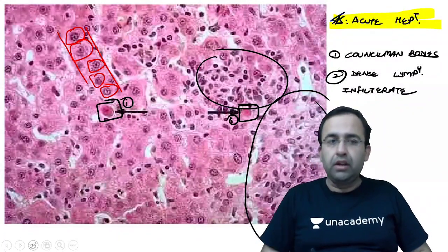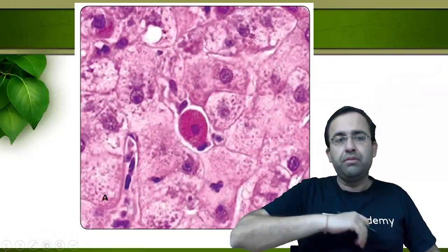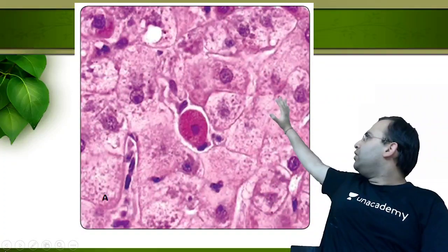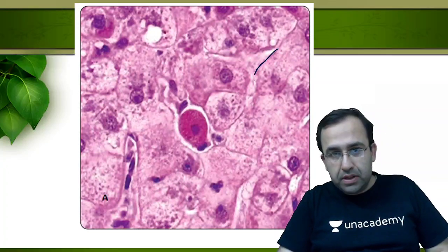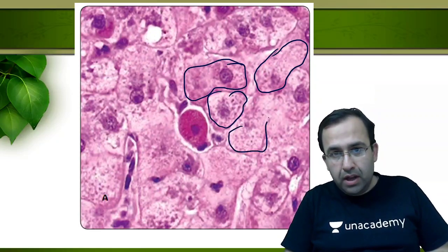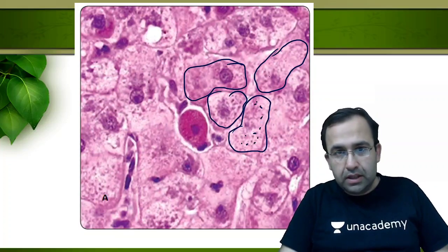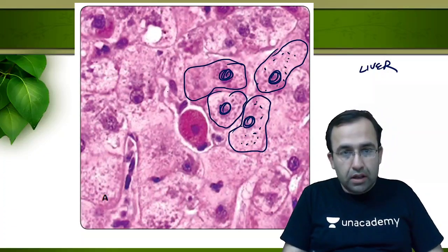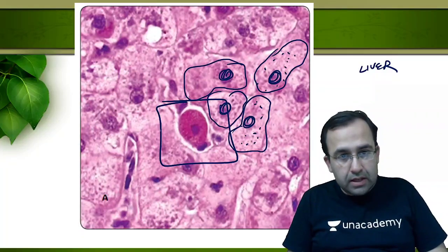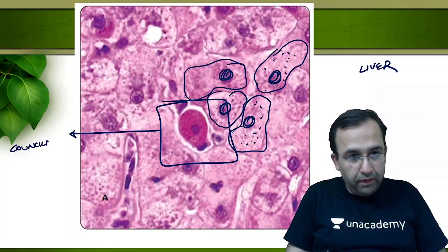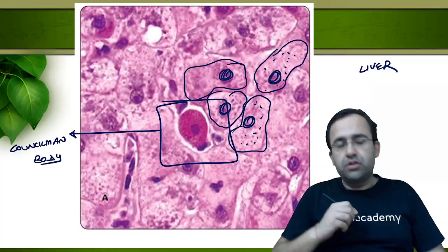This was acute hepatitis. Just to show you a clearer image of councilman bodies — have a look at this. Again, the minute I see this slide, I can make out that all these are the normal hepatocytes: large cells with abundant granular cytoplasm and a nucleus, making the parent organ as liver. They show the presence of a nucleus also. Which is the abnormal cell? This is the apoptotic, contracted, shrunken hepatocyte — that is, councilman bodies — again associated with acute hepatitis.